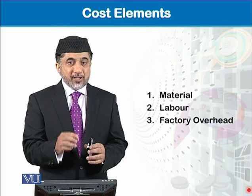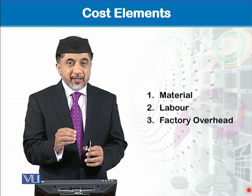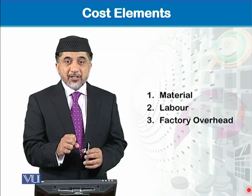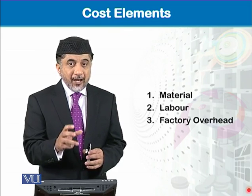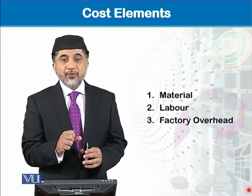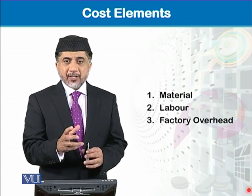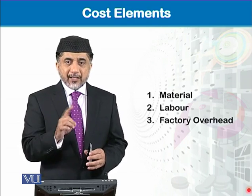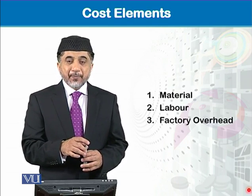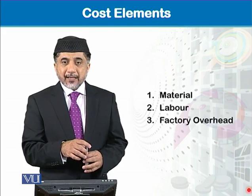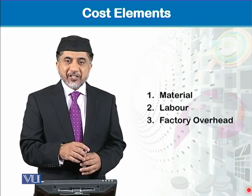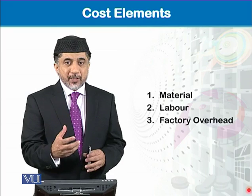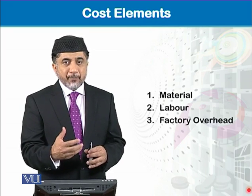Direct material means we can measure that this much cost of material is part of the cost unit. Direct labor means we can measure that this much cost of labor wages is part of the cost unit. To understand indirect costs better, let's take an example of furniture. We know that furniture is manufactured with wood, plastic, or steel.